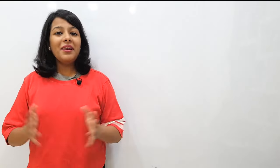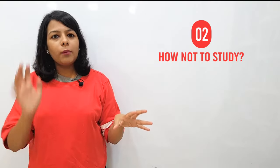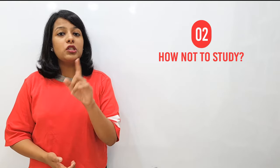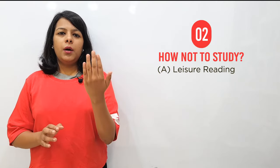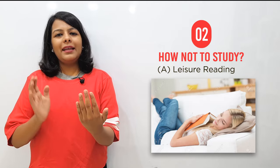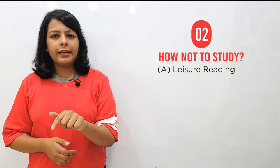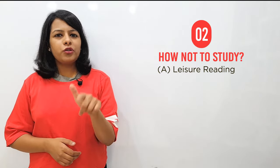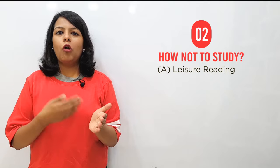Now let's say you've started with research aptitude. The next question is how to study. Before I answer that, let me tell you how NOT to study — because if you know what not to do, you'll automatically figure out what to do. The first thing you must not do is leisure reading. I've seen students lying on a bed, flipping through pages one by one. After an hour of reading like that, you won't be able to answer a single question from those pages.